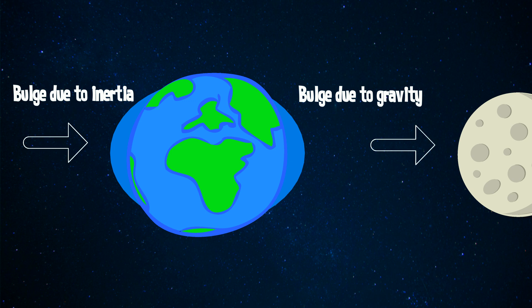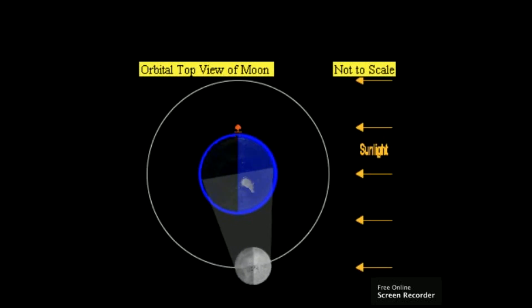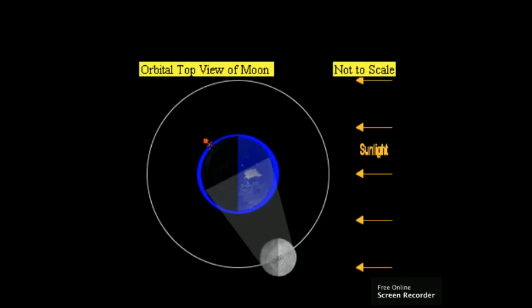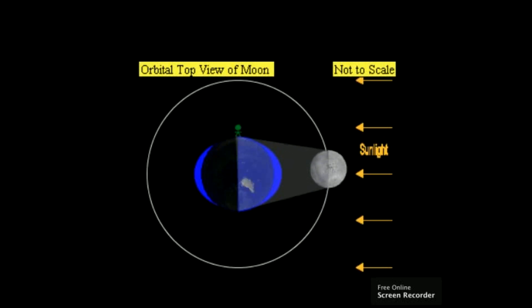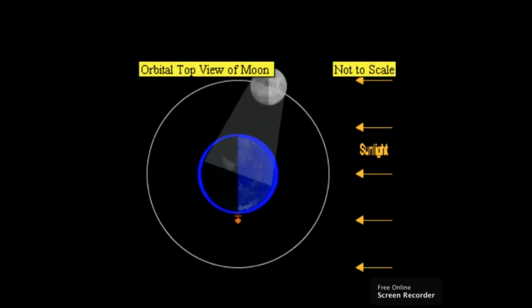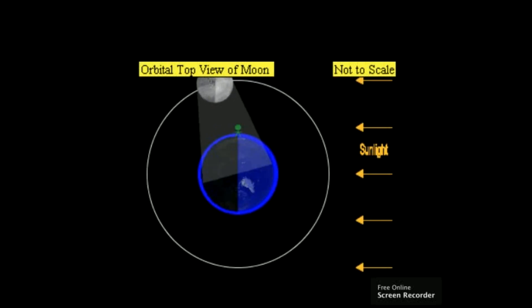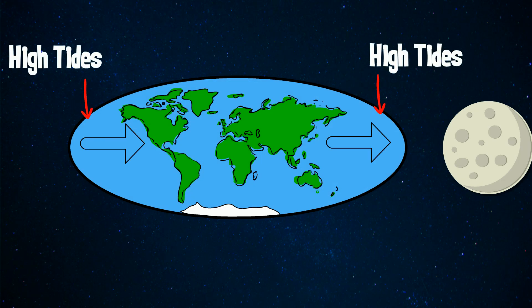The earth rotates on its axis, so this bulge — which is called the tidal bulge — is constantly changing direction. In this simulation, watch how the tidal bulge changes as the moon revolves around the earth. Where the bulge is larger, it's high tide. Where the bulge is smaller, it's low tide.